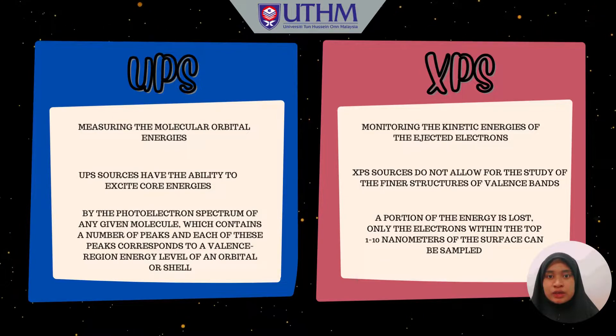In UPS, the photo-electron spectrum of any given molecule contains a number of peaks and each of these peaks corresponds to a valence region energy level of an orbital or shell. While in XPS, a portion of the energy is lost. Only the electrons within the top 1 to 10 nanometers of the surface can be sampled.